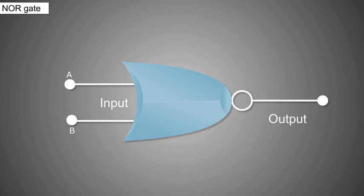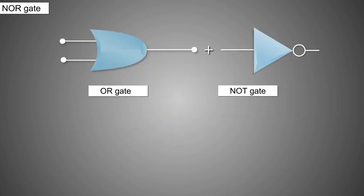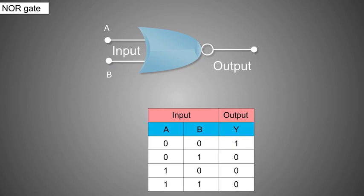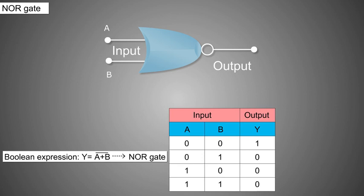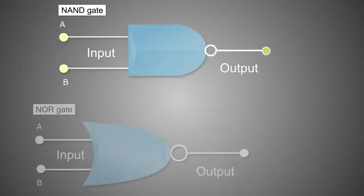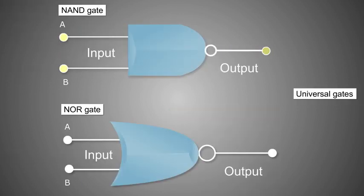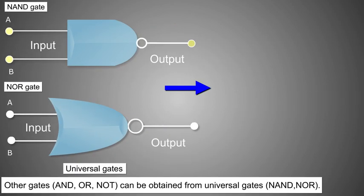The NOR gate is a NOT operation applied after the OR gate — giving a NOT-OR, or simply NOR gate. Its output is 1 only when both inputs A and B are 0. If any one of the inputs is 1, the output of the NOR gate is 0. The boolean expression Y = (A + B) bar represents the NOR gate.